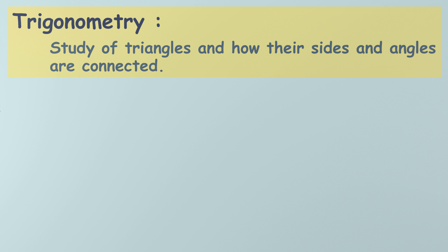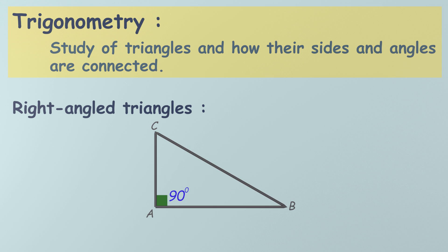But hold on, we're not talking about any triangle. Our star of the show is the right-angled triangle, the one with a perfect 90-degree angle. Let's break down the parts of a right-angled triangle. First up, the hypotenuse, the longest side in the triangle. It's always right across from the right angle. Think of it as the triangle's VIP. It never changes its spot, no matter what.